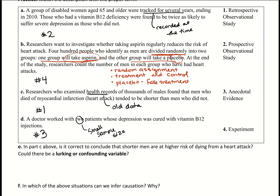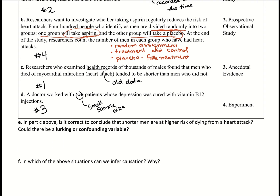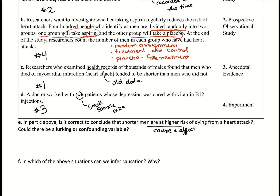Going back to example C: is it correct to conclude that shorter men are at a higher risk of dying from a heart attack? The historical records showed a relationship, but this is observational data — they just recorded information. That conclusion is a causation statement, claiming cause and effect, which is a very strong claim. With any observational study, the answer is always no when it comes to claiming cause and effect.